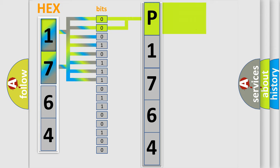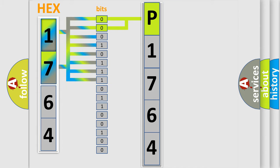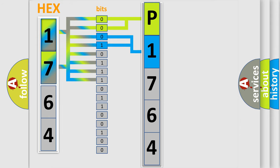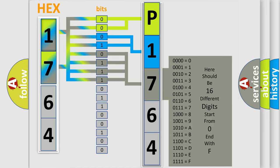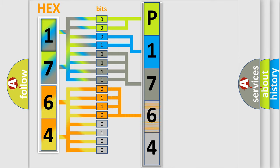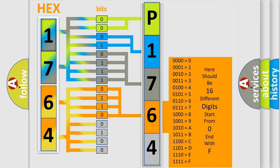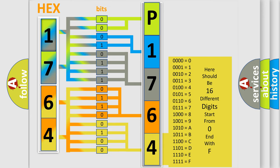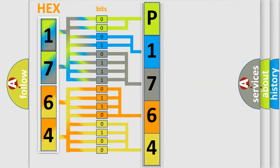By combining the first two bits, the basic character of the error code is expressed. The next two bits again determine the second character. The last four bits of the first byte define the third character of the code. The second byte is composed of a combination of eight bits. The first four bits determine the fourth character, and the combination of the last four bits defines the fifth character. A single byte conceals 256 possible combinations.